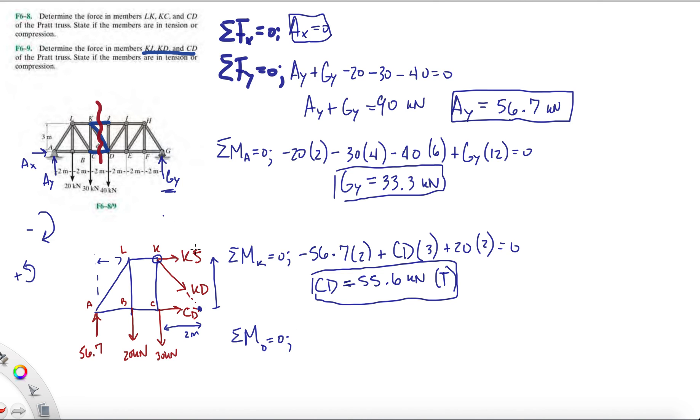So let's do moment about D equals zero. By doing that, we're going to take KJ. KJ wants to pull it in this direction, clockwise, so minus KJ times 3, minus 56.7 times 6. Plus 20 times 4 - remember all these are two meters apart - plus 30 times 2. And CD and KD don't cause any moment, they're just pushing on that joint, equals zero.